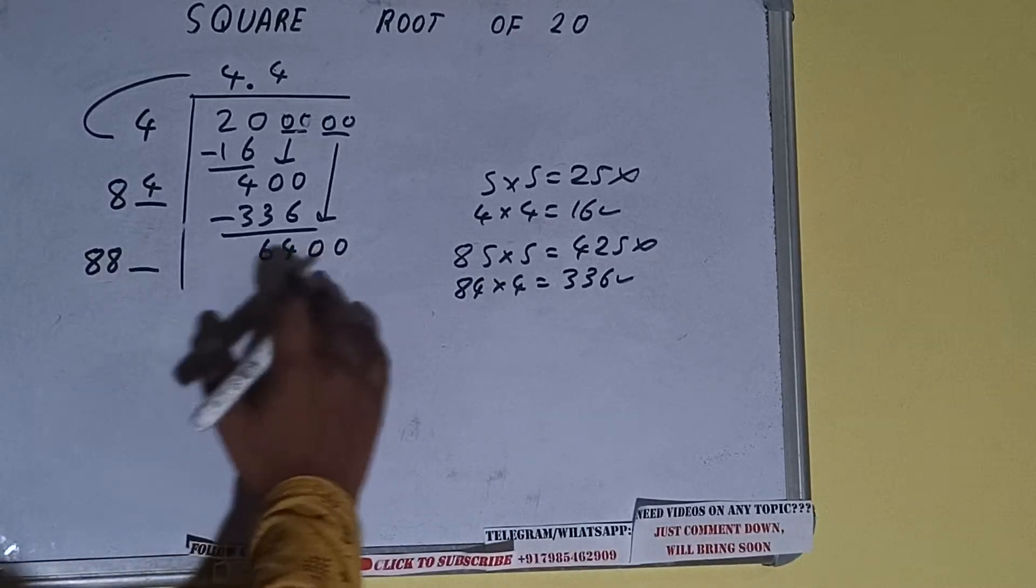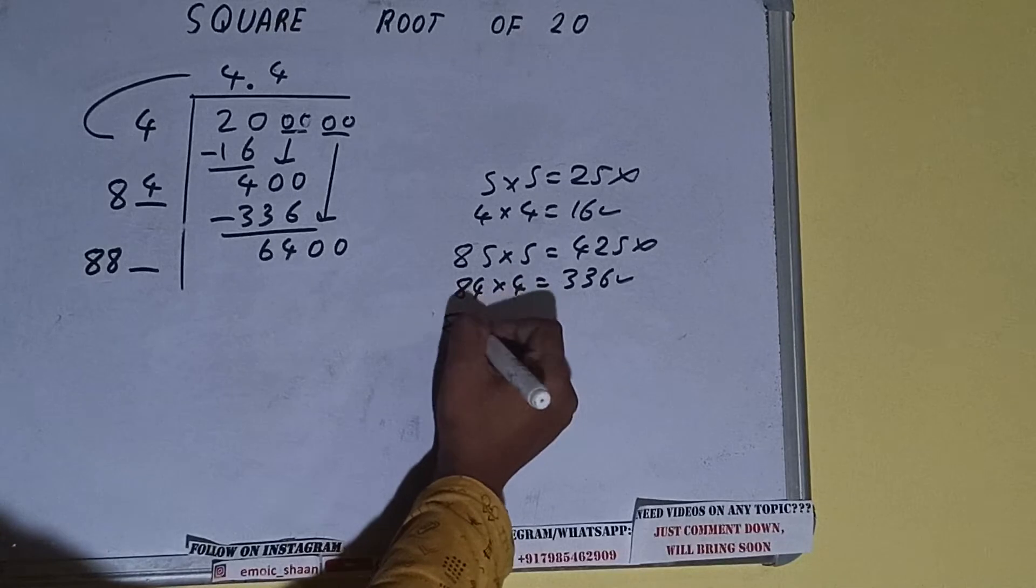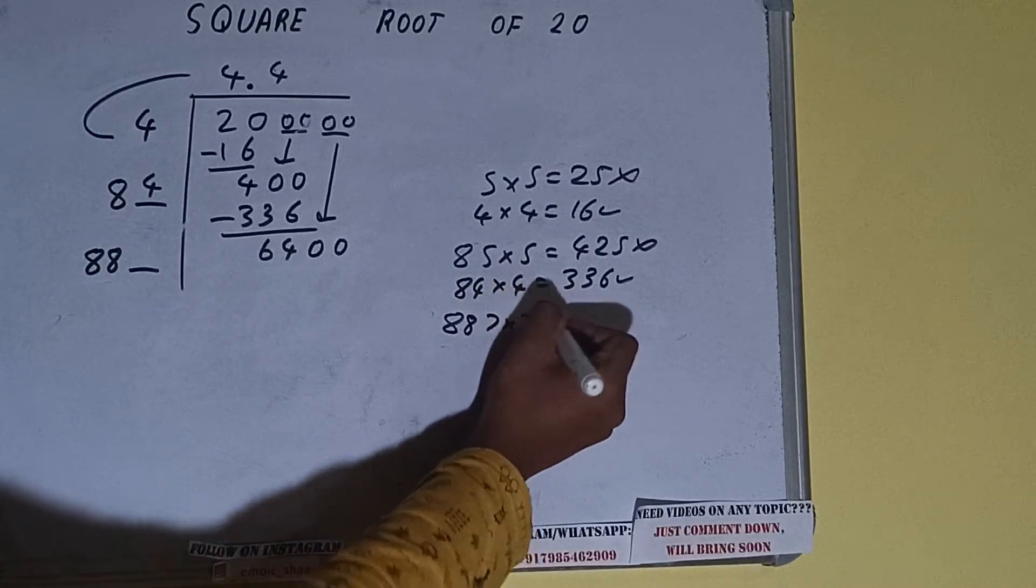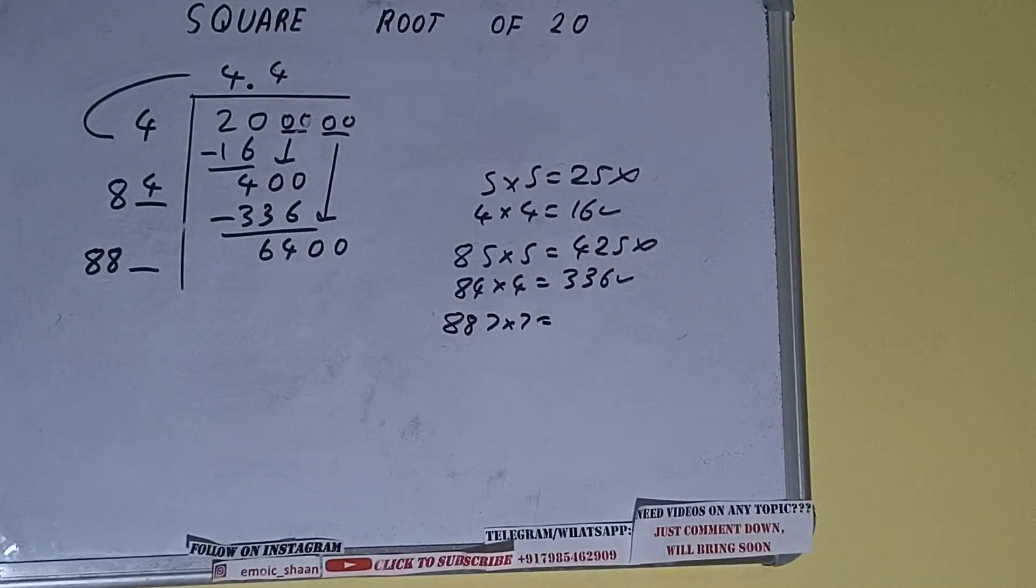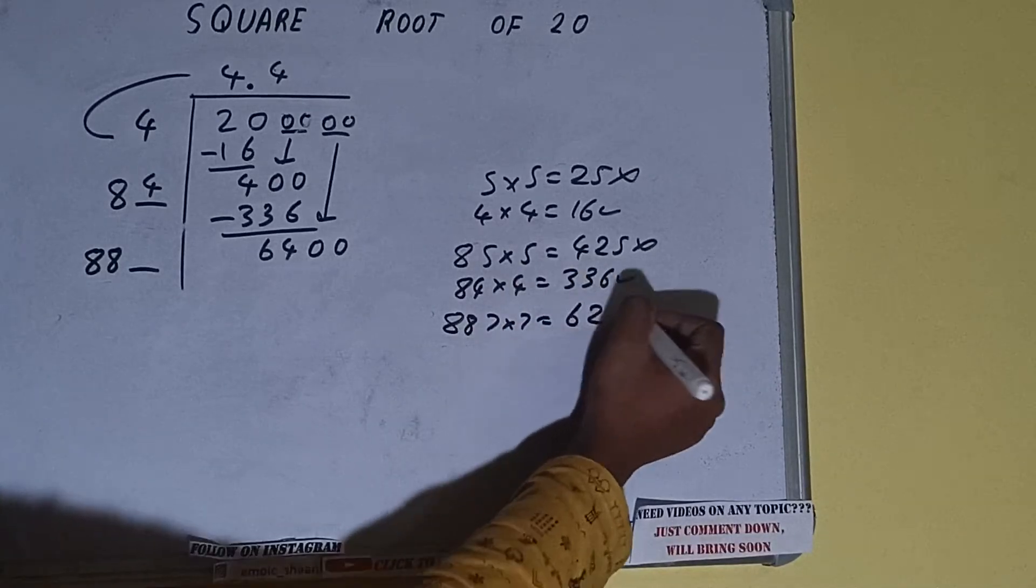7 times 887 into 7, we can try. It will be 6209, which is good to use.